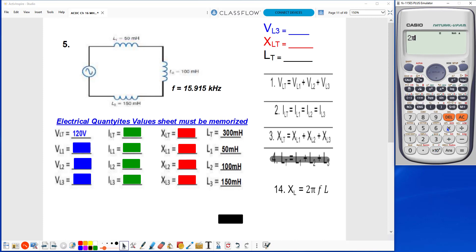2π times my frequency of 15.915 kilohertz times 10 to the third, times my L value of 300 times 10 to the negative third, 300 millihenries, equals, hit engineering, we're going to round that up to 30k ohms.